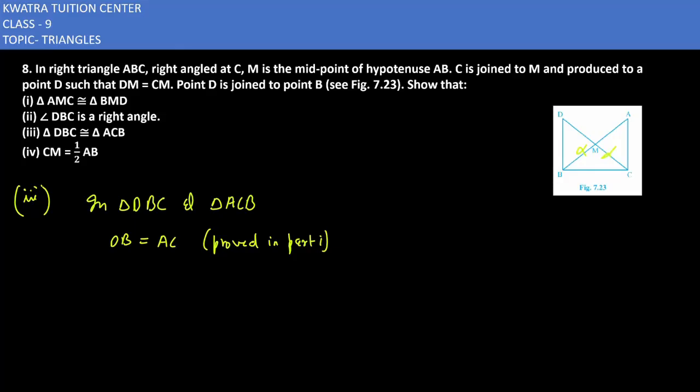Second thing, angle DBC equals 90 degrees, and BC is equal to BC, it is common. So what is the congruency here? Again it is SAS congruency.